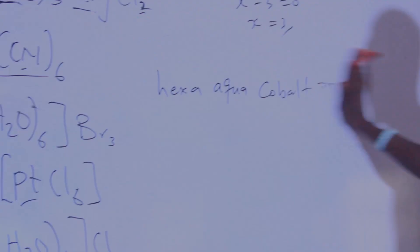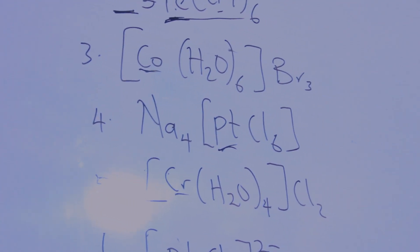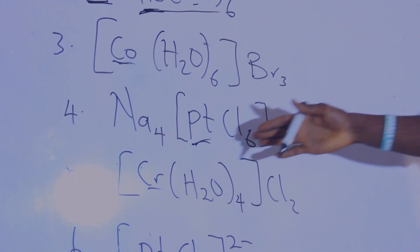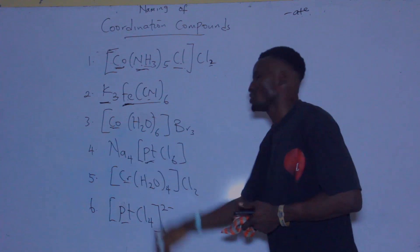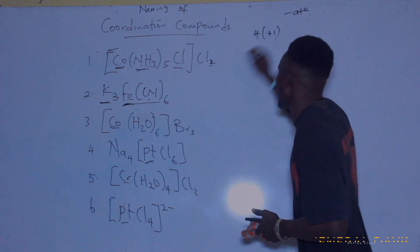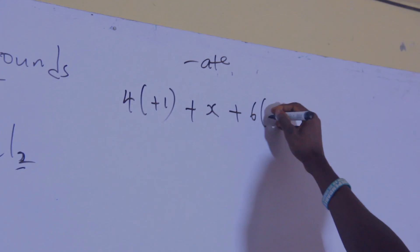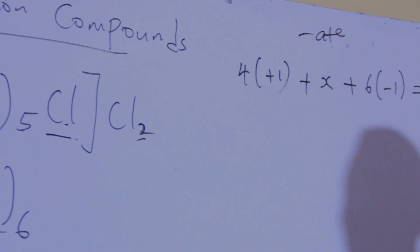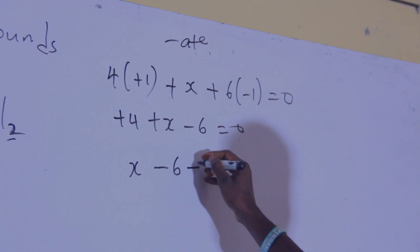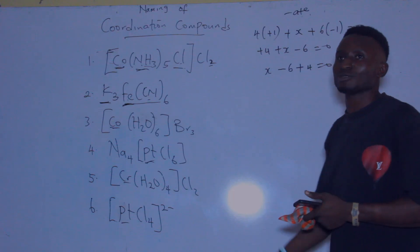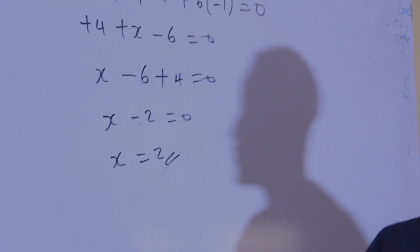For the fourth compound, the central atom is platinum, which is found on the anion side, so it will be called platinate. Finding the oxidation state: 4(+1) for sodium, plus X for platinum, plus 6(−1) for chlorine, all equals zero. So 4 + X − 6 = 0, giving X − 2 = 0, therefore X = 2. The oxidation number of platinum is two.